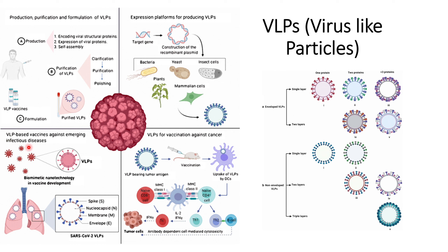One of the latest examples is that VLPs can be used to target infectious diseases such as SARS-CoV-2. These SARS-CoV-2 VLPs can be injected into the patient, and the VLPs will help the immune system of the body to generate antibodies against SARS-CoV-2 that can then target the actual SARS-CoV-2 virus against which the patient is infected.